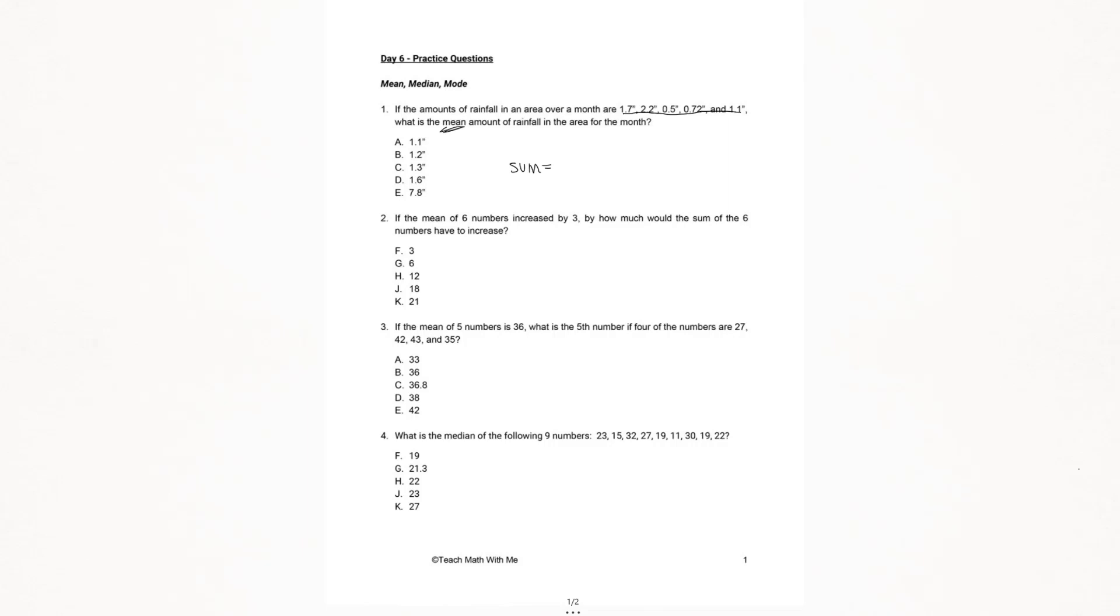So when we add those up, we're going to get a sum of 6.22. For these five numbers, we're going to take that and divide by five. When you divide by five on your calculator, or if you need to do it by hand, you get 1.244.